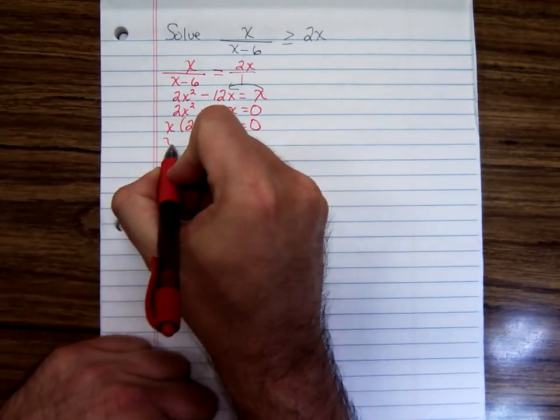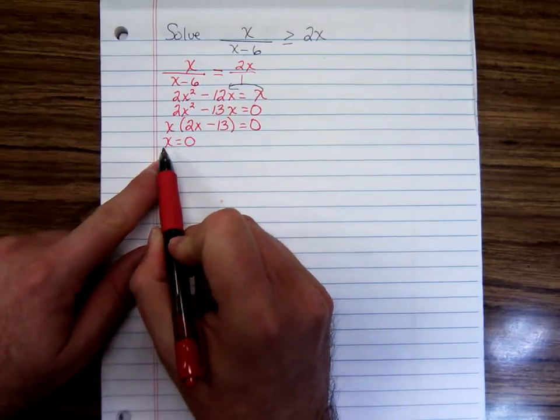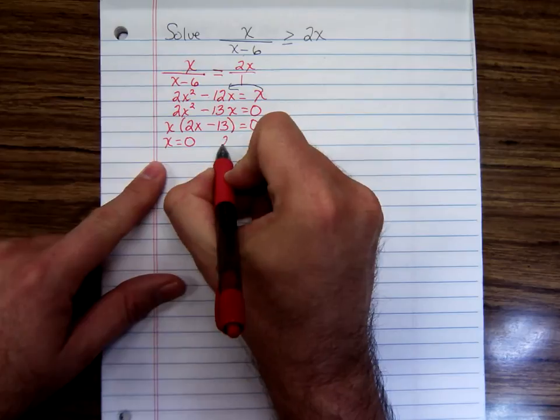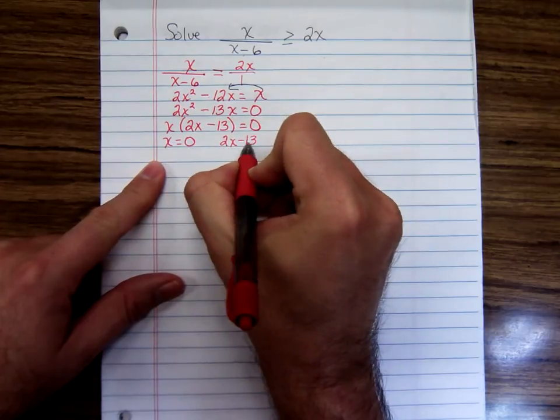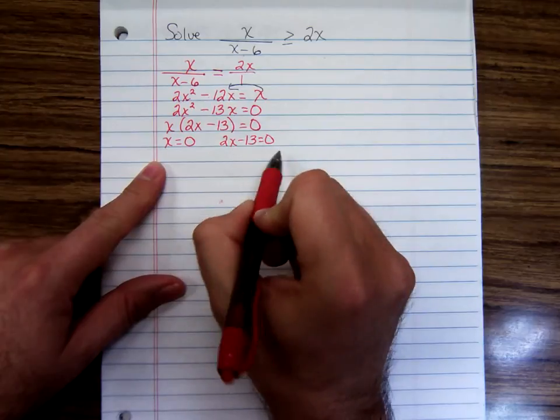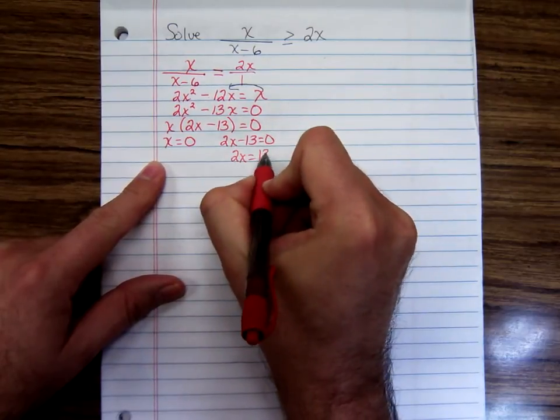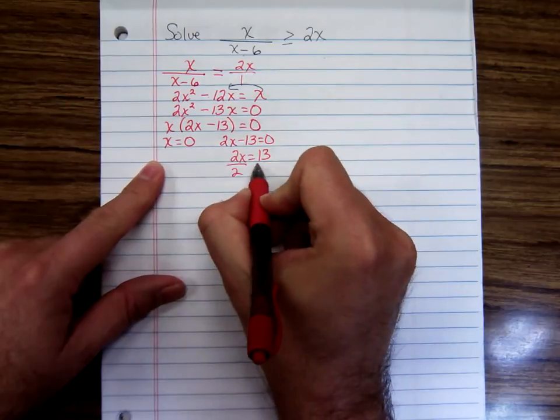Now let's set each one of these factors to 0. Don't forget that x equals 0. Sometimes students forget to set that to 0. And to solve this, I'll move the 13 over by adding 13 to both sides and dividing by 2.